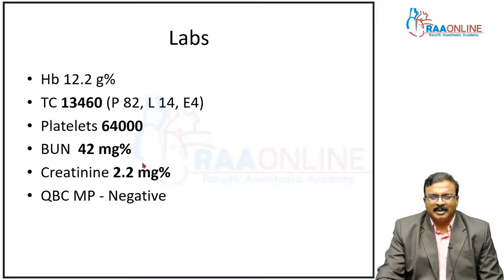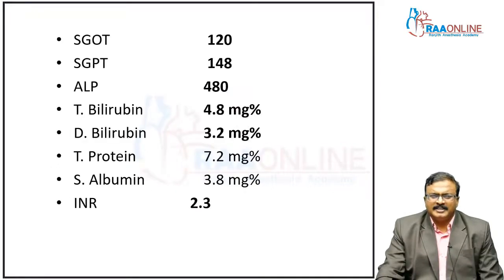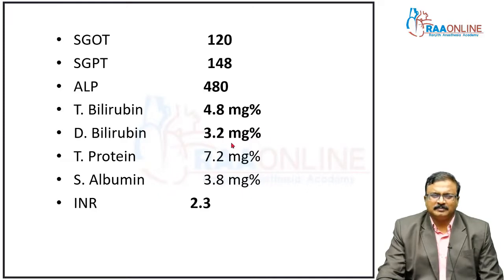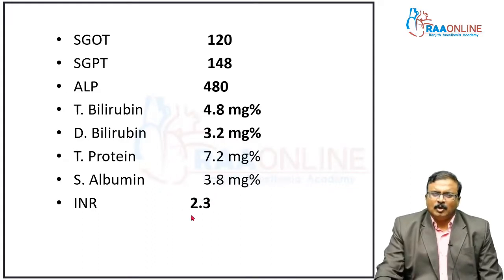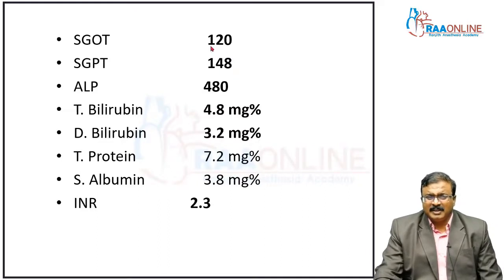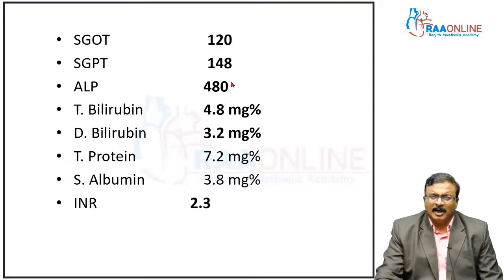RFT is altered — renal functions are impaired: BUN 42, creatinine 2.2. SGOT is 120, PT is 148, alkaline phosphatase 480. There is direct hyperbilirubinemia. INR is elevated — liver function is compromised, coagulopathy is present. The clue from this LFT is that there is definitely hepatitis, because SGPT is more than SGOT, and the alkaline phosphatase is elevated.